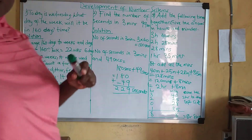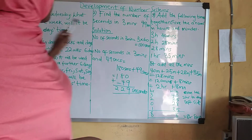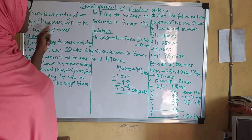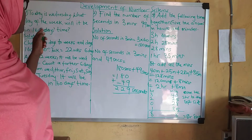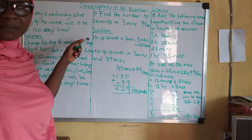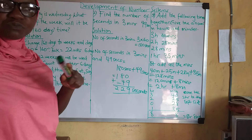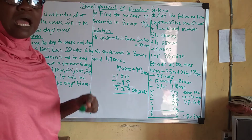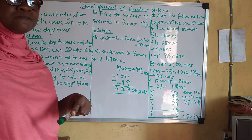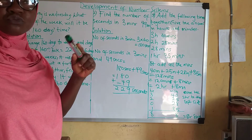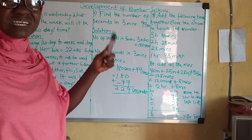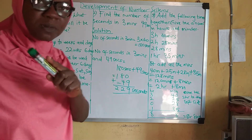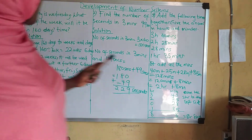Now, let's look at this question first of all. Today is Wednesday. What day of the week will it be in 160 days time? Assuming today is Wednesday, you want to know the day that is going to be in 160 days time. So come along with me and let's see what day it's going to be.